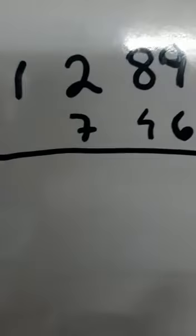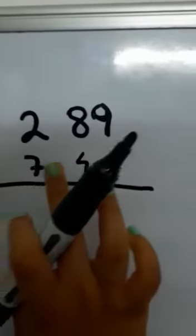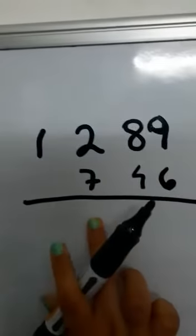Welcome to Adyarch. Today in this video we will do some subtraction and the first sum is 1289 minus 746.